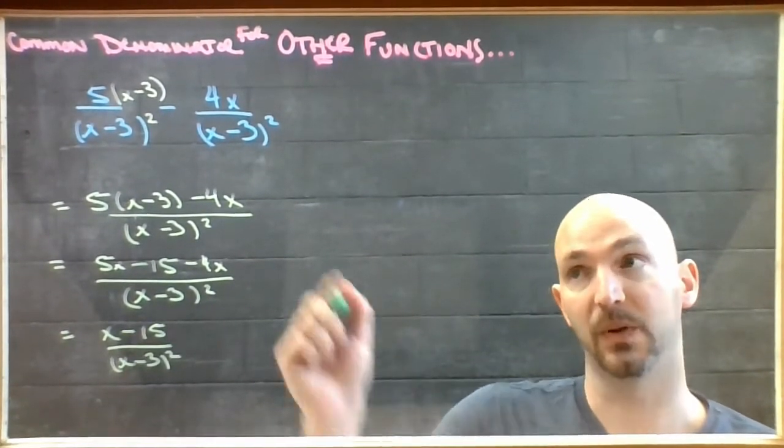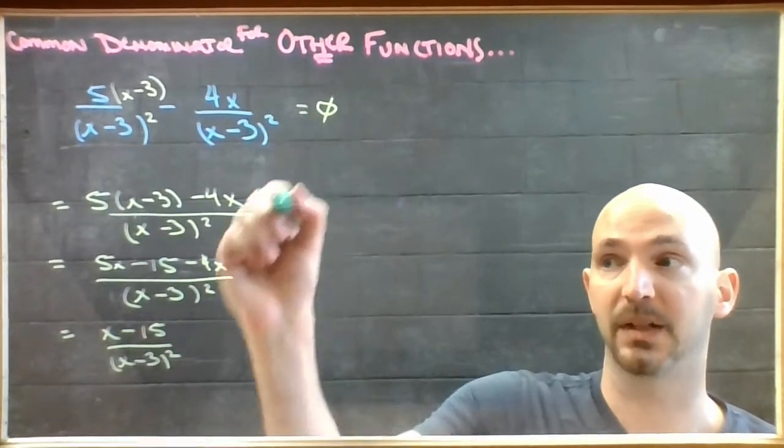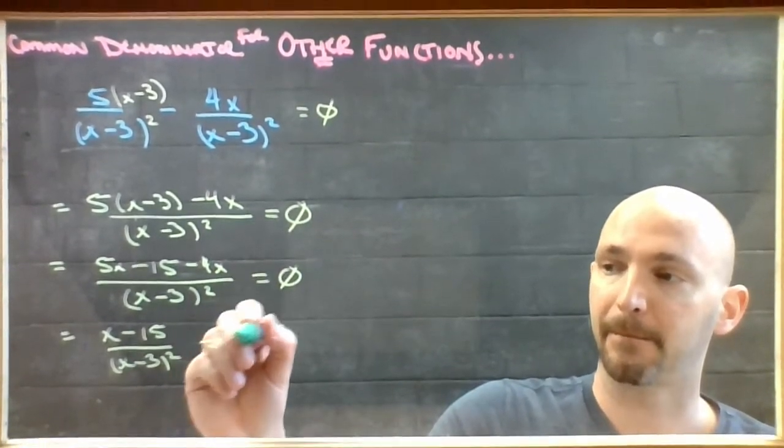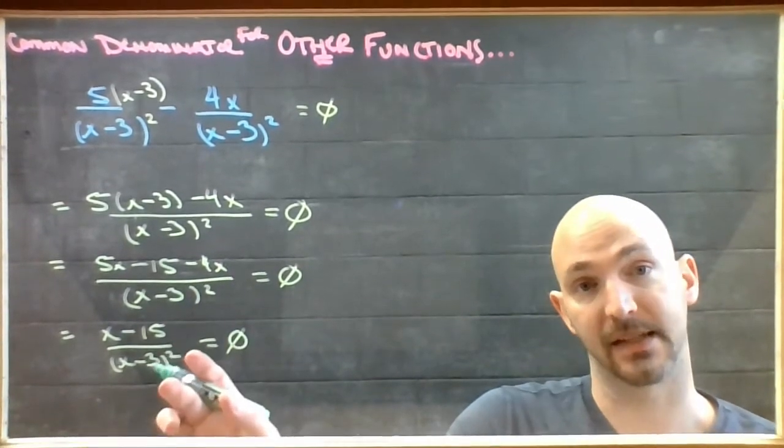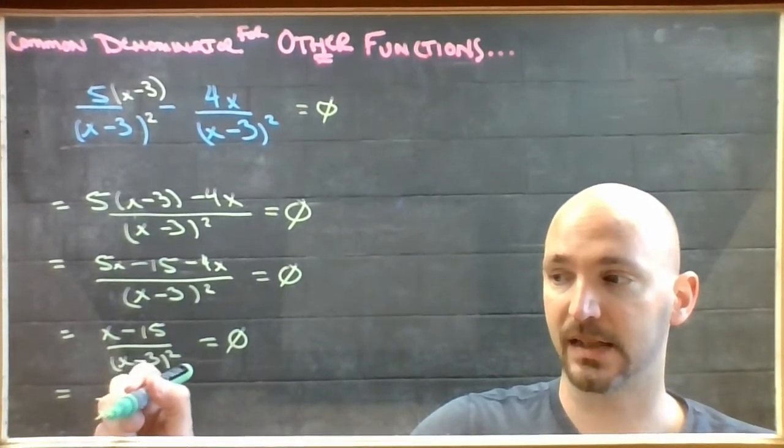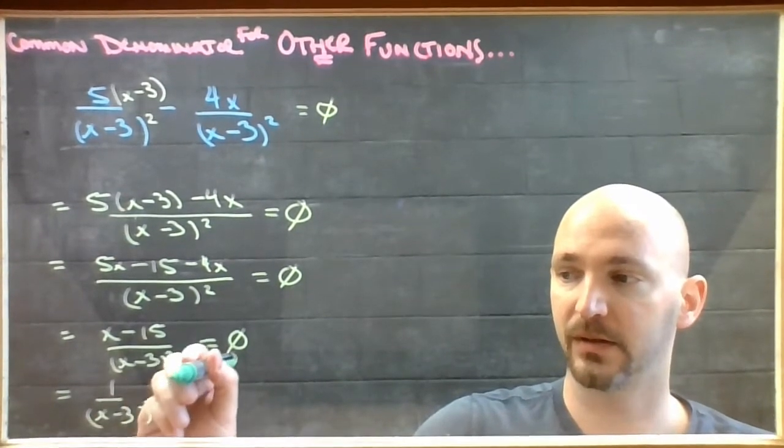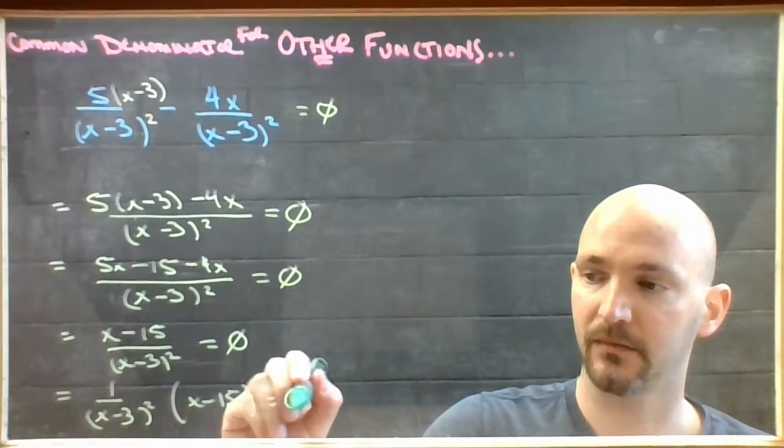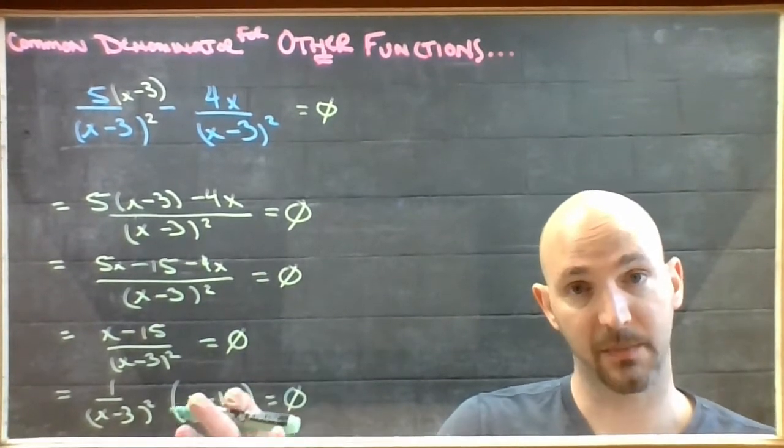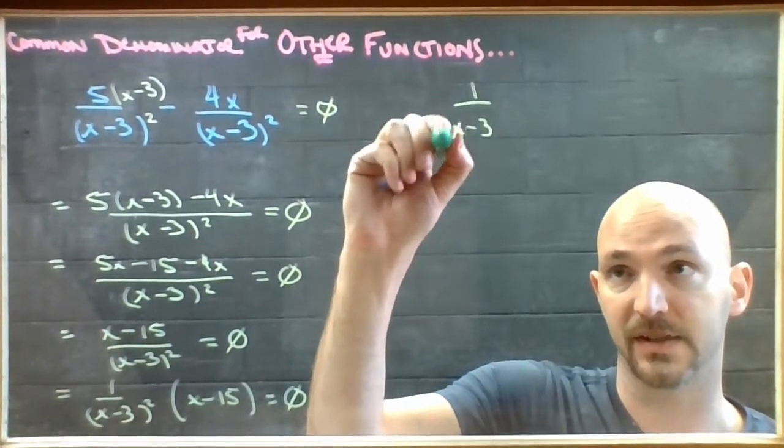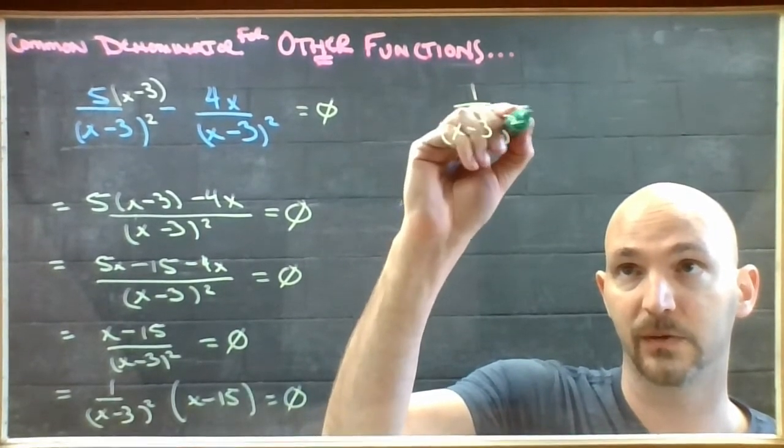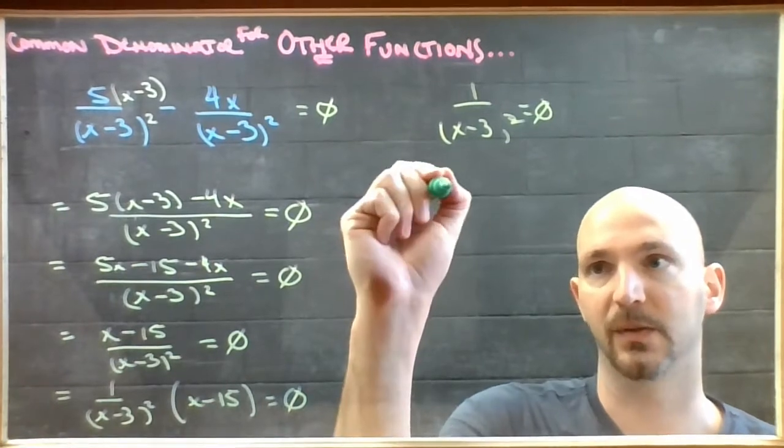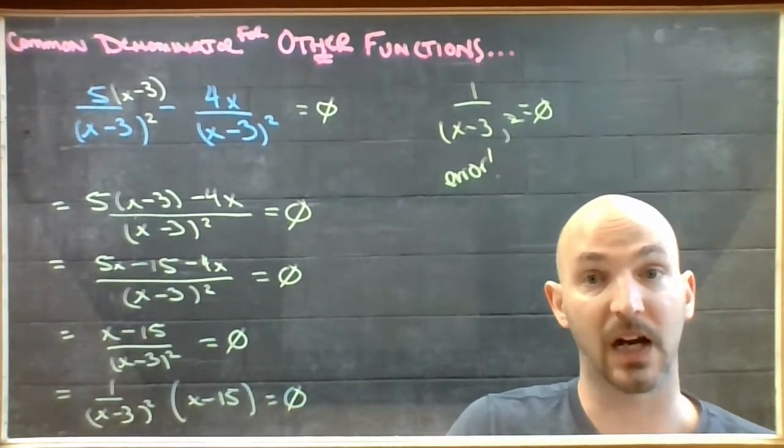And this is another example of where if this thing had been equal to 0, I would be able to split this into my two cases, right? The one is the rational part, and the other is the linear part. So when I set this up as two cases, 1 over x minus 3 squared equaling 0 is attempting to get 0 by division, which doesn't work. So this one is an error right off the gate. You don't even have to try.